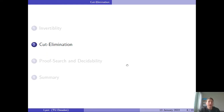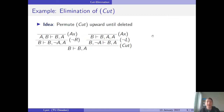Let's now move on to cut elimination, a very famous topic in proof theory. Before explaining how cut can be eliminated in general, I'll give an example of how cut is permuted upwards in a proof until it is deleted at the axioms. In this particular derivation, NOT-A is the cut formula occurring in both the left and right premises. The NOT-A's were obtained from the auxiliary formula A occurring in the premise of the negation right rule and the premise of the negation left rule.